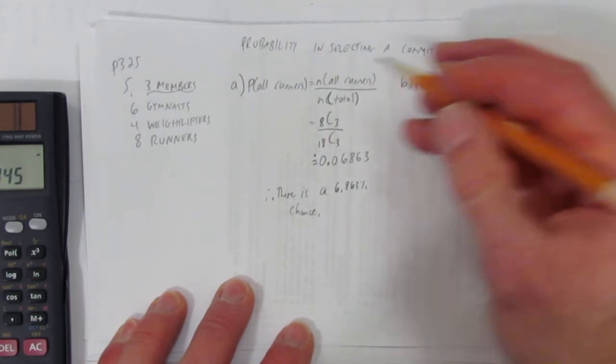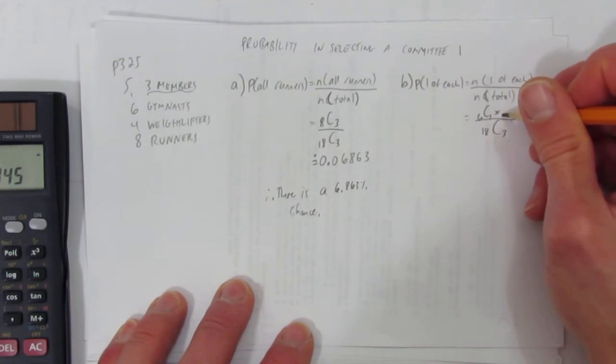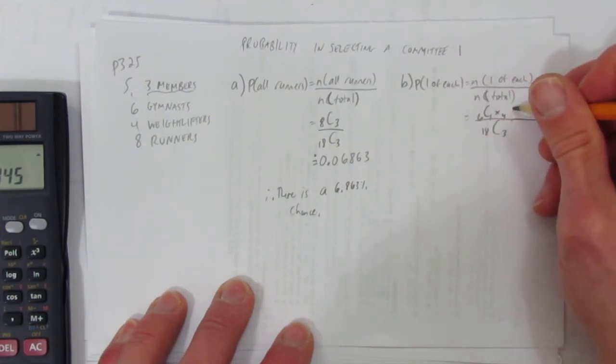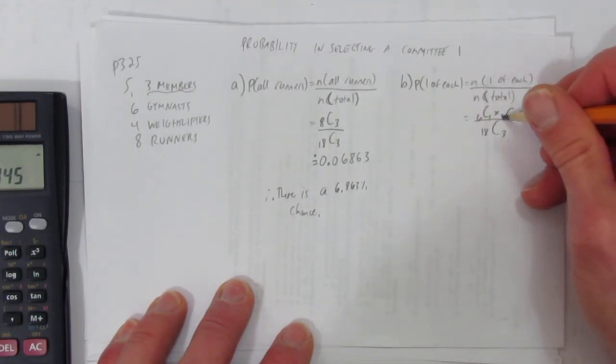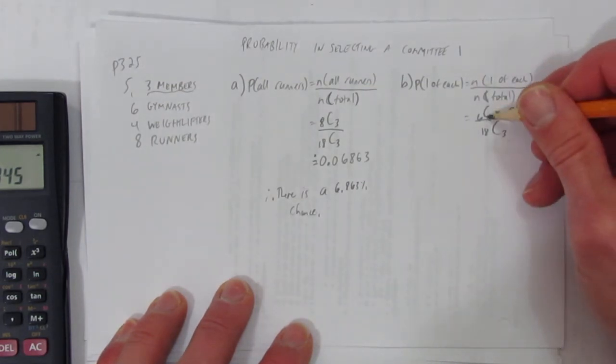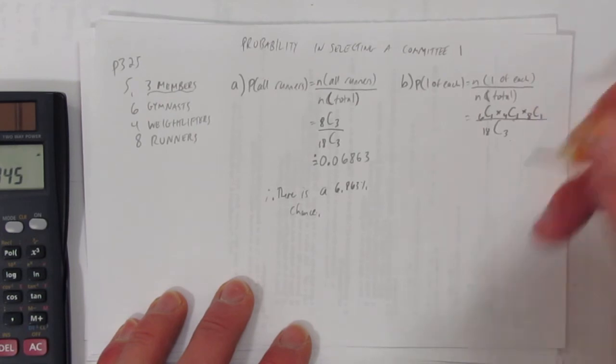I want to choose one of each. So, of the six gymnasts, choose one. Times, for each of those choices, I can choose from the four weightlifters, choose one of them. And for each of those choices, that's times again, I can choose of the eight runners, choose one. One of the six gymnasts, one of the four weightlifters, one of the eight runners. And we multiply it together, because for each of these choices, for every gymnast that I choose, I can choose any of the weightlifters. And for any of this combination of choices, I multiply it by all the choices I can make for the runners.